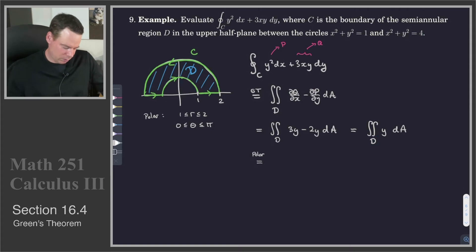And so let's do it. Theta goes from 0 to pi. R goes from 1 to 2. We've got y, which is r sine theta. dA becomes r dr d theta.